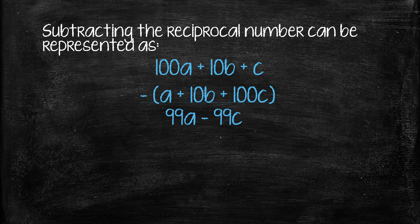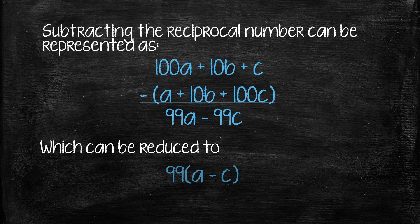And when we subtract that out, algebraically we get 99A minus 99C, which can be reduced to 99 times the quantity A minus C.